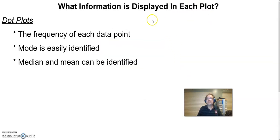So when we look at our dot plots, the dot plot tells us the frequency of each data value, each data point, how many times each data point happens. I can easily identify the mode because the mode is which value happens most often, and then I can actually figure out median and mean by writing down my values.